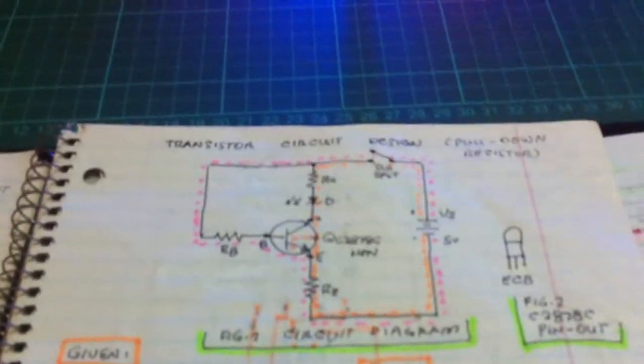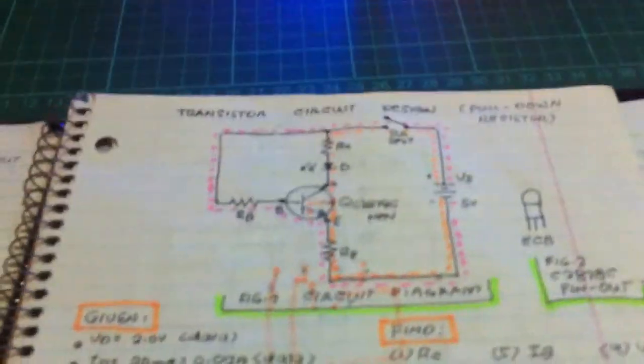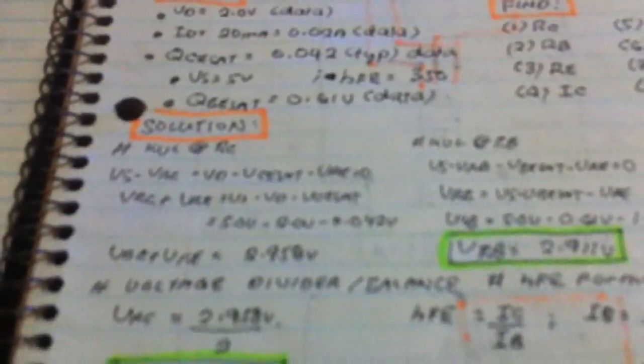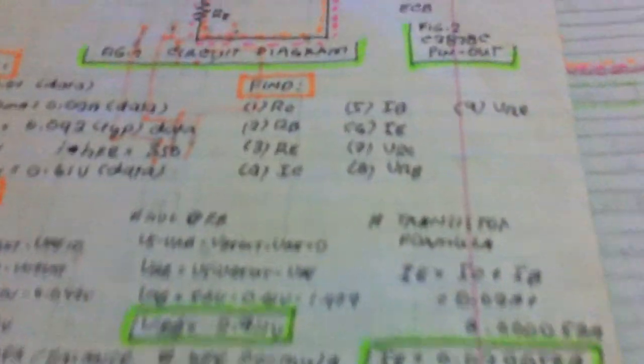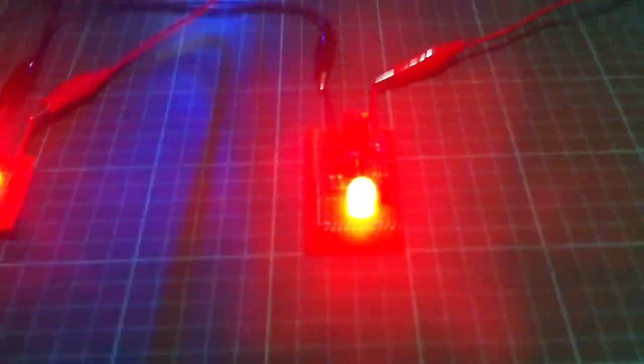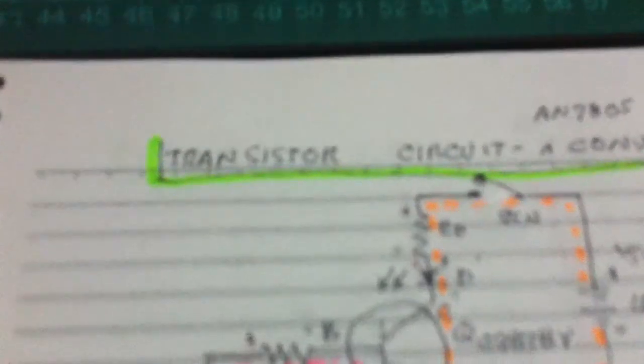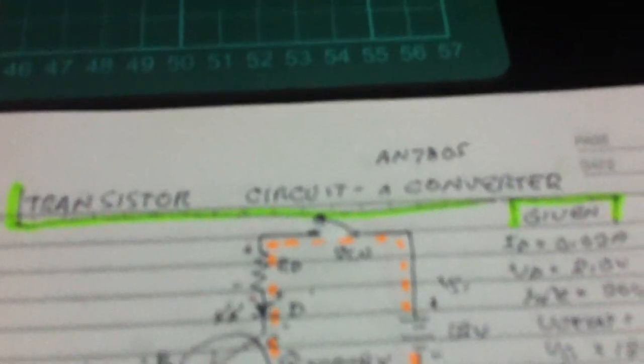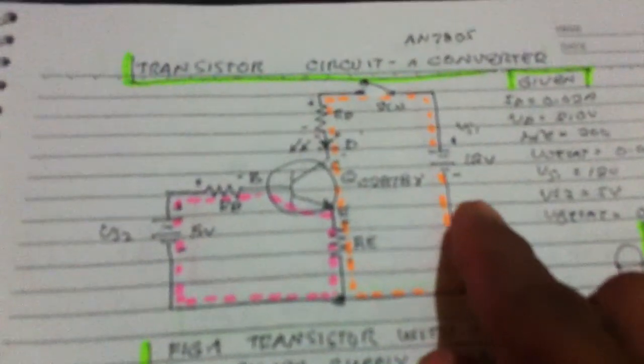This is my previous circuit, where I calculated all the values using lots of formulas. We now come to our new circuit — there is a blinking LED and an LED. Let us see the circuit. This is our new circuit: a transistor circuit with an AN7805 converter.